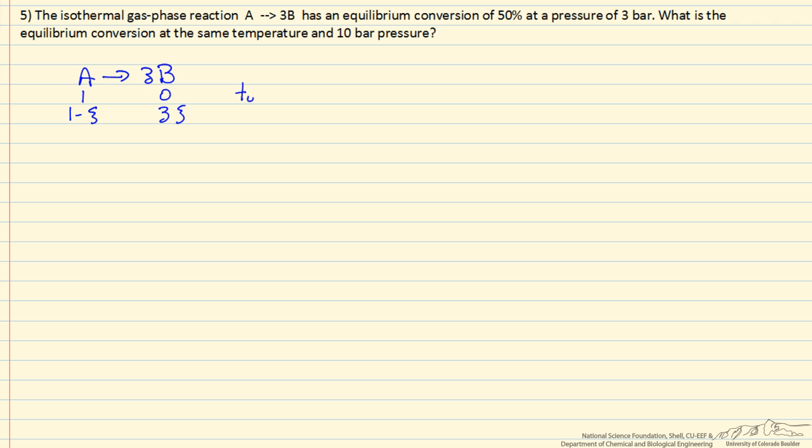We have 3 times that for the number of moles of B. The total number of moles is 1 plus 2 times the extent of reaction, which means at any given extent of reaction, the mole fraction of A is the number of moles over the total moles, and the mole fraction of B is the number of moles of B over the total moles.